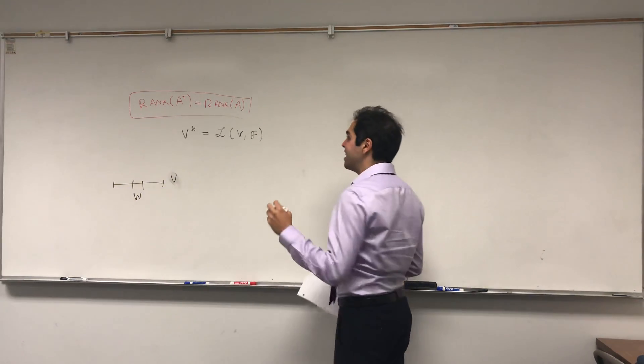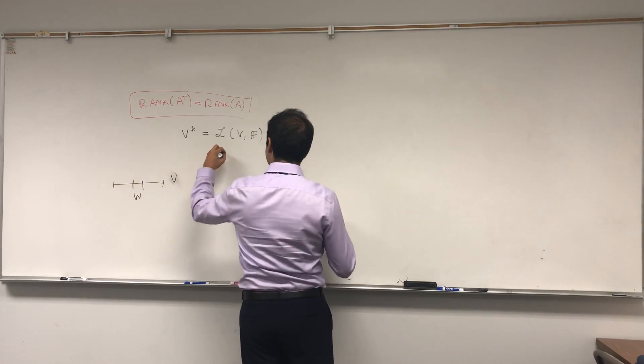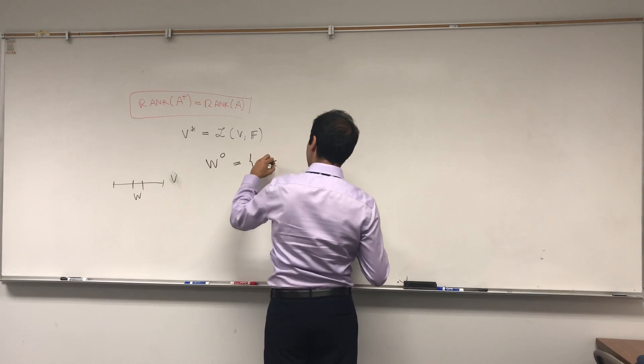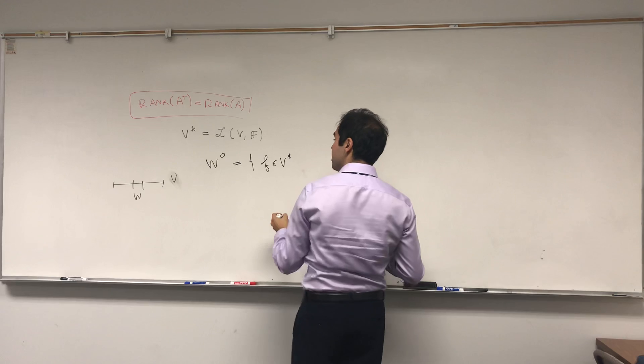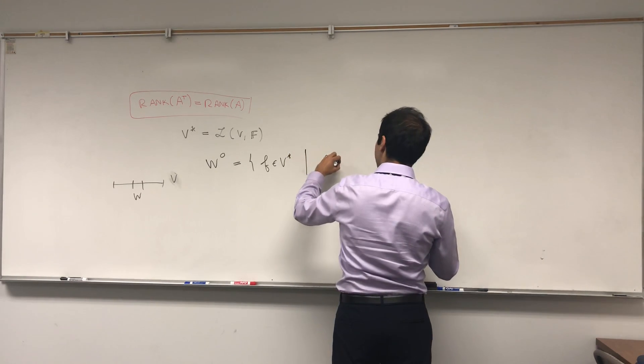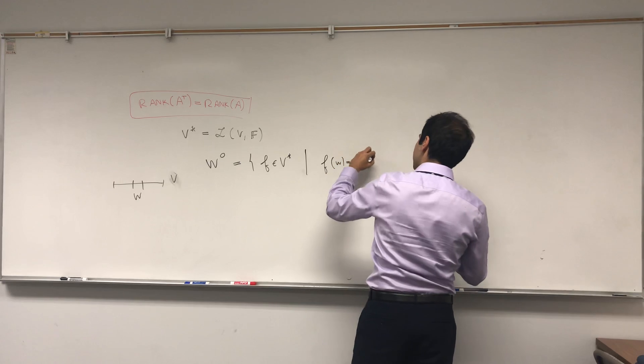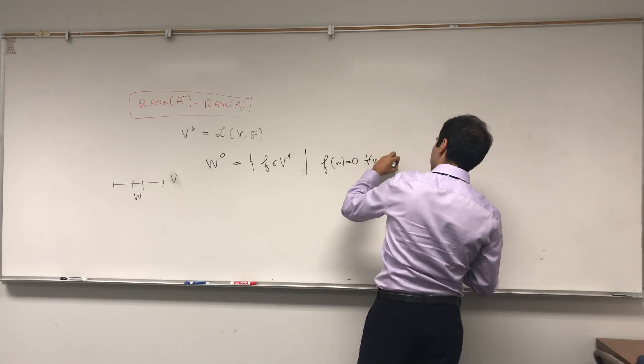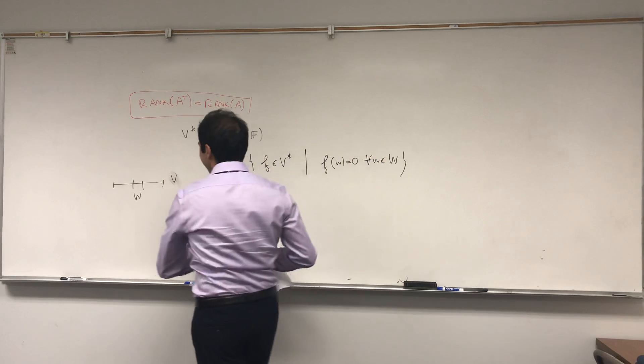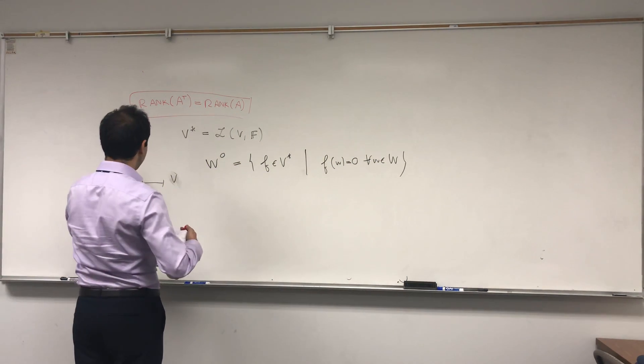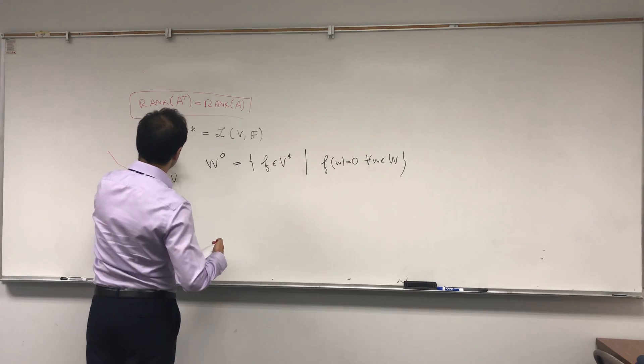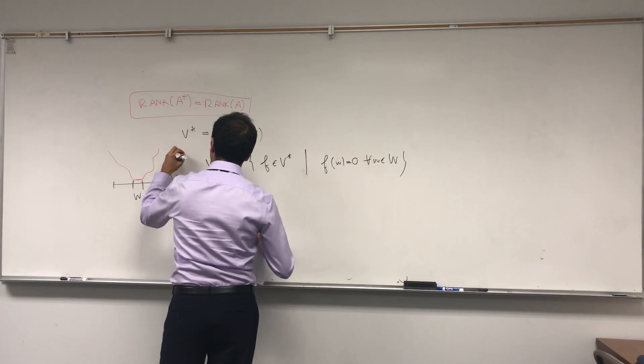Then in a previous video, I defined the annihilator. I love that word, which is W naught, which is just a set of functionals in V star such that f is 0 on W. So f of W equals 0 for all W in W. So what the annihilator looks like, it's just functions which are definitely 0 here, could be non-zero somewhere else. So that is f and W naught.